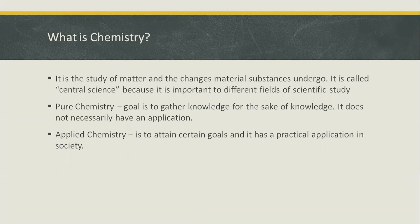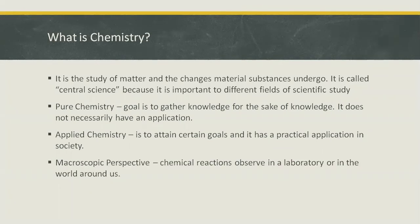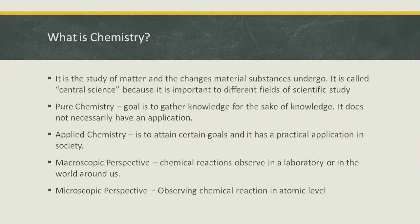There are two levels of understanding or perspective in chemistry. The first is macroscopic, in which we observe chemical reactions in the laboratory or in the world around us. The second is microscopic, which involves observing chemical reactions at the atomic level.